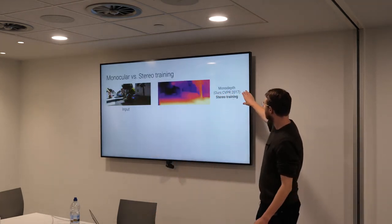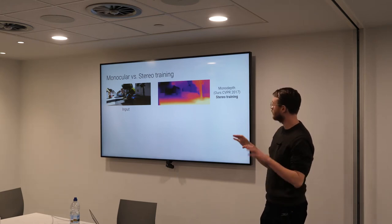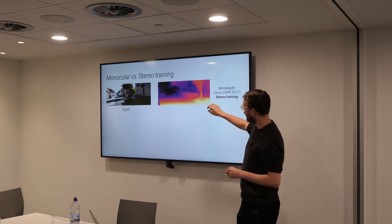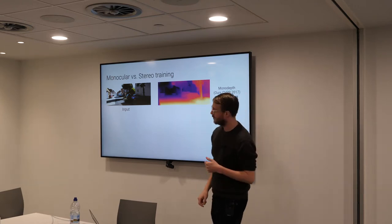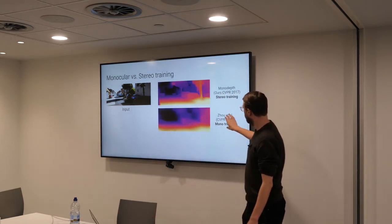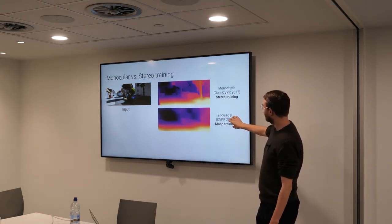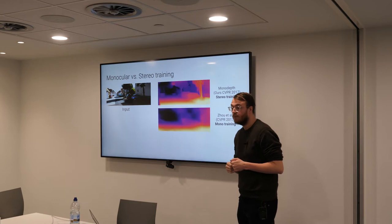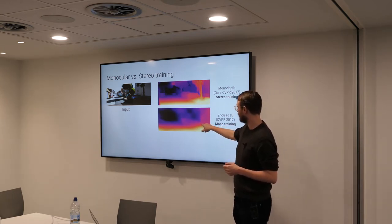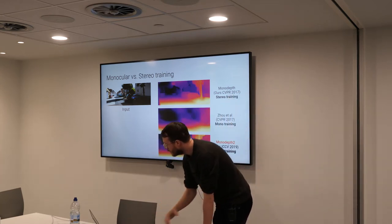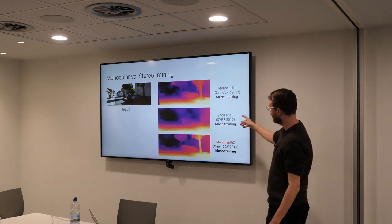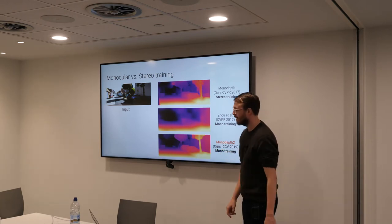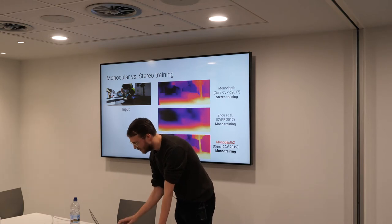Here's where we were at with Monodepth in 2017 — this was the stereo training. Brighter colors mean the model thinks those pixels are closer, and darker colors mean further away. This is what happened when Zhu et al. generalized the model to train on monocular sequences — they took a hit in terms of the actual quality of predictions. And then in our most recent work, we've managed to recover a lot of the accuracy that was lost. Even training on only monocular video sequences, we're still getting actually quite nice predictions.